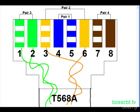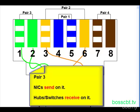When we talk about the pairs, pair three, which is pins one and two, that's used by a PC, a network interface card on a PC, in order to send data. It uses that pair to send. If it's sending to a hub or a switch on that pair, that means the hub or switch actually is going to receive the data on pair three. Hubs and switches receive on pair three, and NICs, PCs, send on pair three.